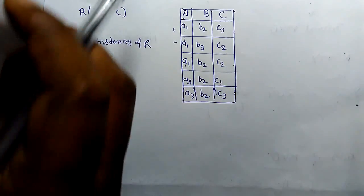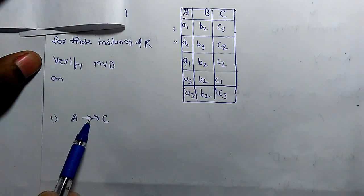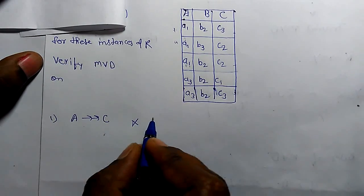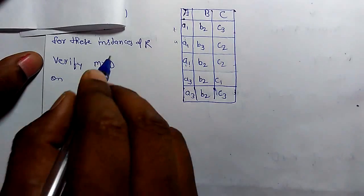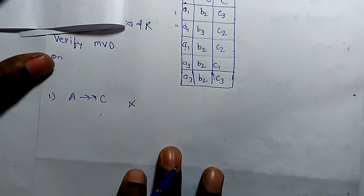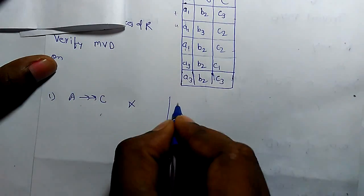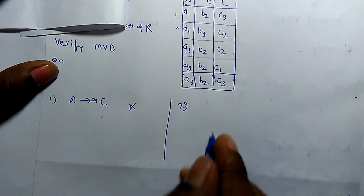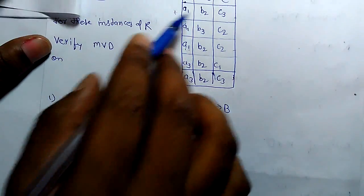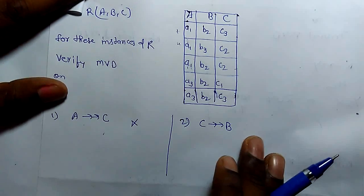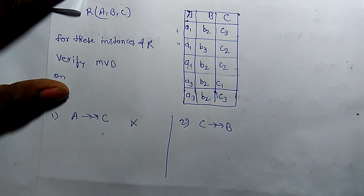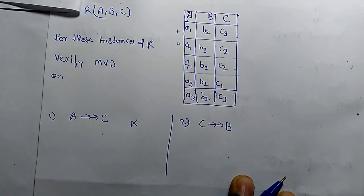So the relation A multivalued determines C is not in multivalued dependency for these instances. Let's take another example. C multivalued determine B for this relation and for these instances, verify this multivalued dependency holds or not. Let's verify.